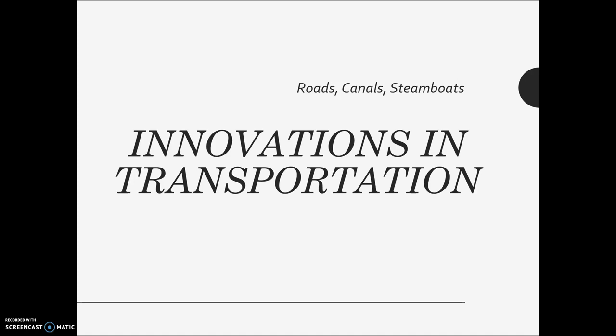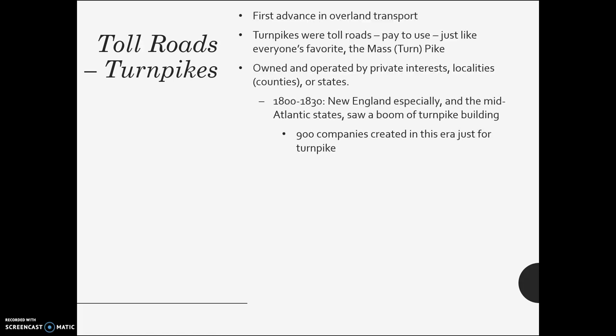The first part here is really looking at innovations in transportation. One of the first things you get are new roads — turnpikes. This is really the first advanced overland transport you've had in a while. Turnpikes are paid roads, just like the Mass Pike and things like that. Back then they could often be private. We saw a lot of these in New England and the Mid-Atlantic.